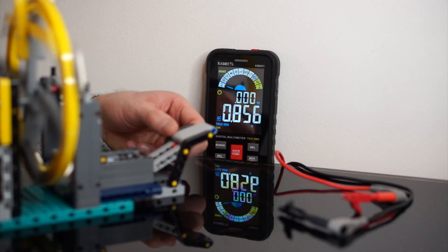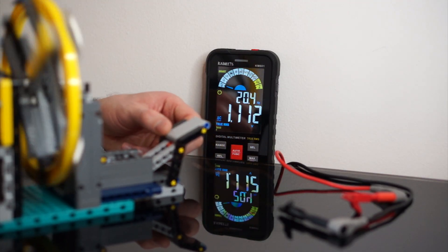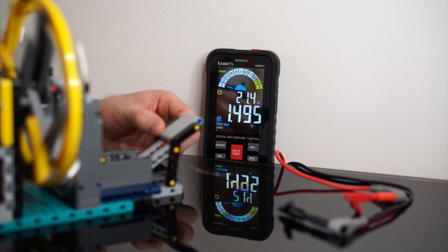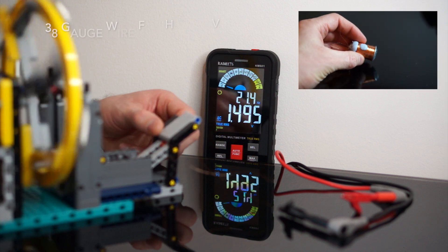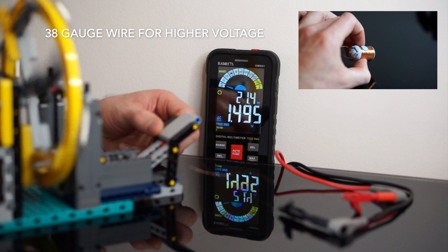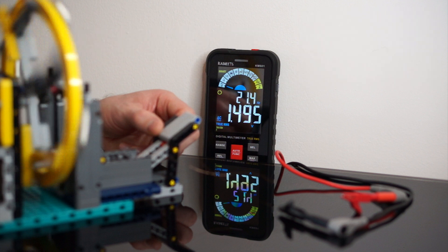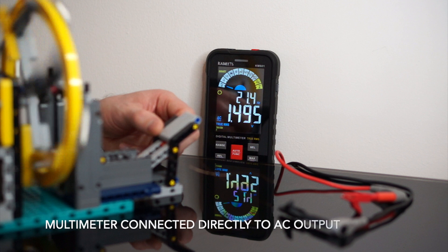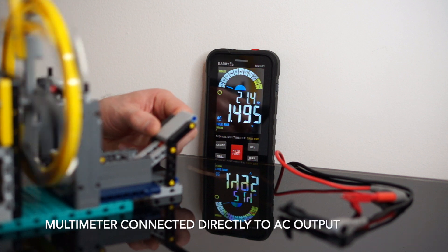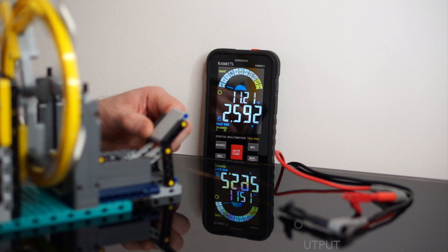Next let's measure the output on a multimeter to see how the distance impacts output. For this I'm going to use this thinner 38 gauge wire coil which will generate a higher voltage making it easier for us to see how it's impacted. This multimeter can measure AC so we can just hook it up directly to the outputs of the wire coil.